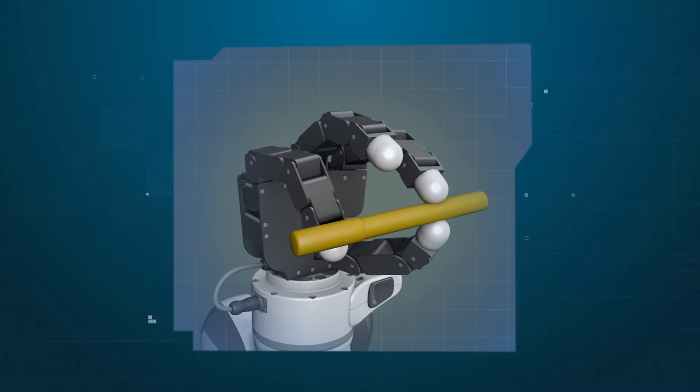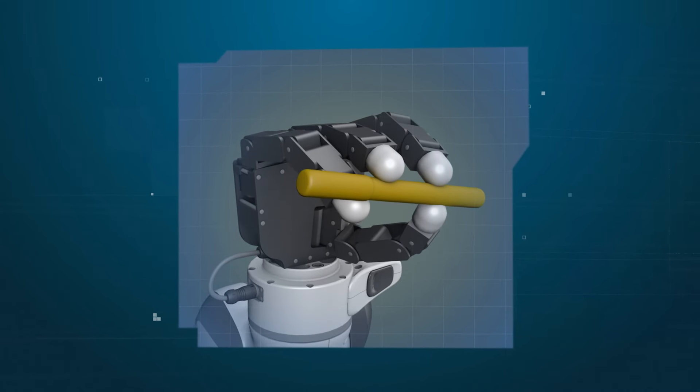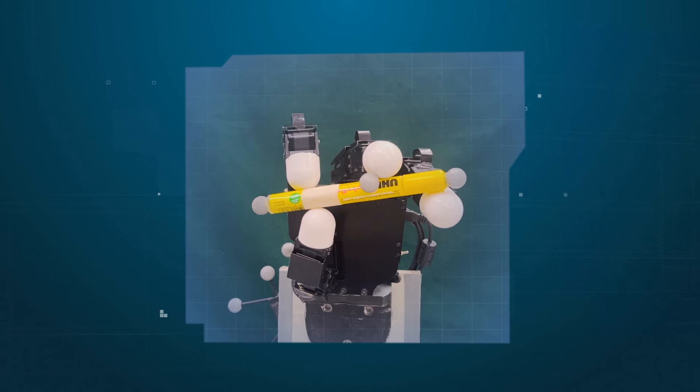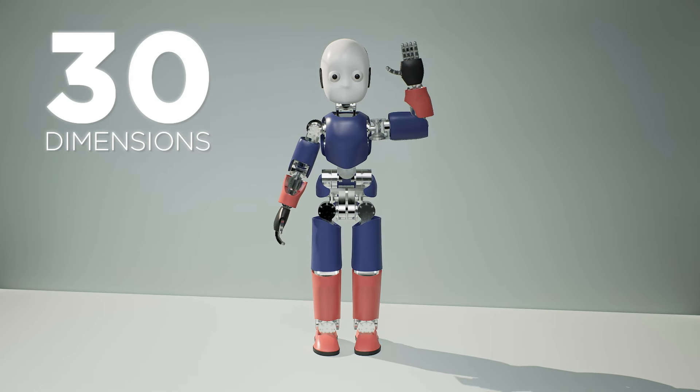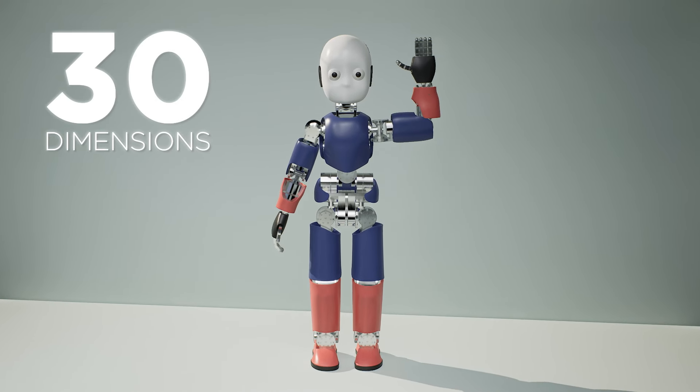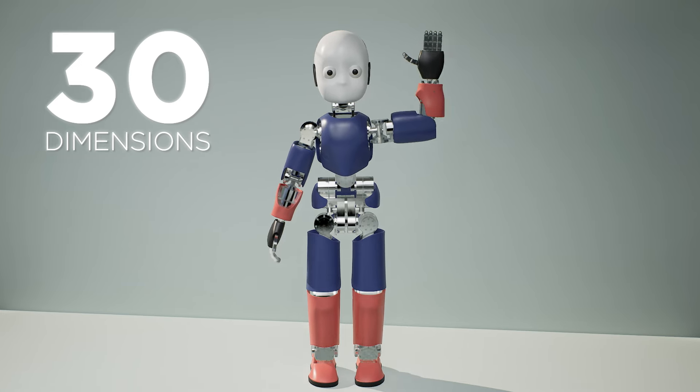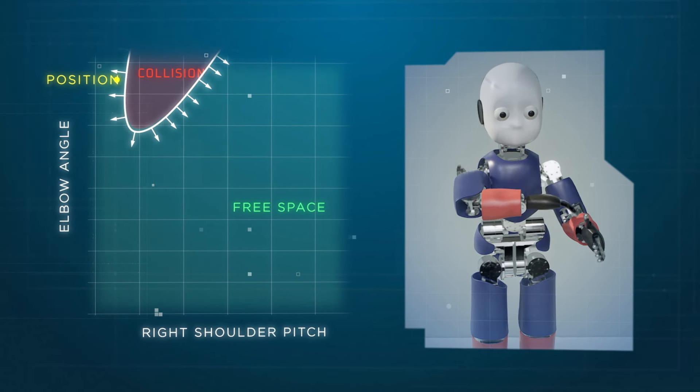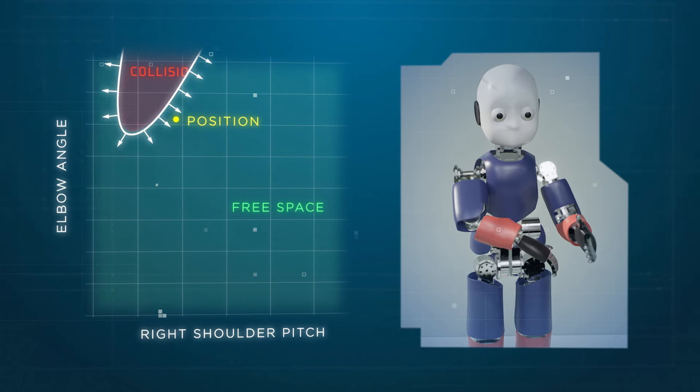The same approach can be used to, for example, ensure that the fingers of a robotic hand avoid obstacles in real time. Avoiding obstacles is necessary for dexterous manipulation, such as when repositioning the grasp on a pen without fingers knocking into the pen or themselves.